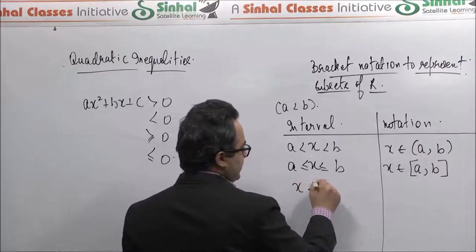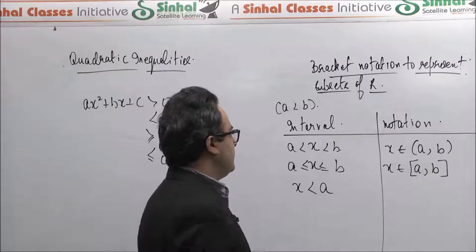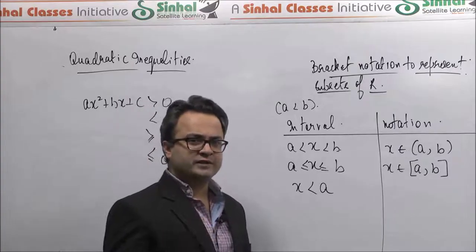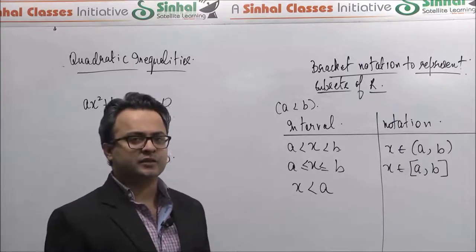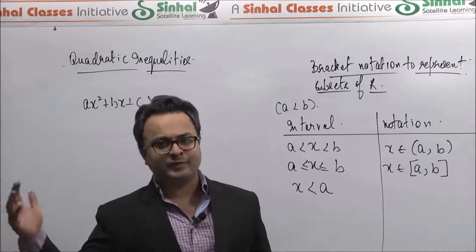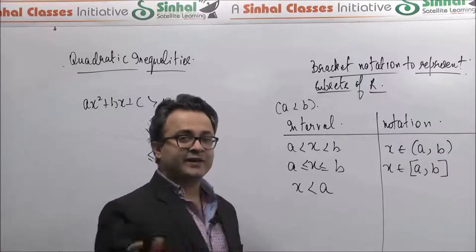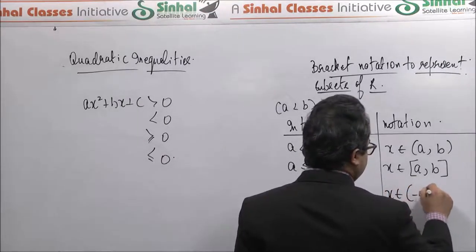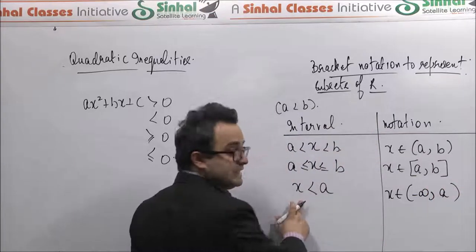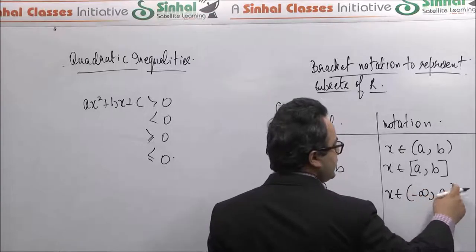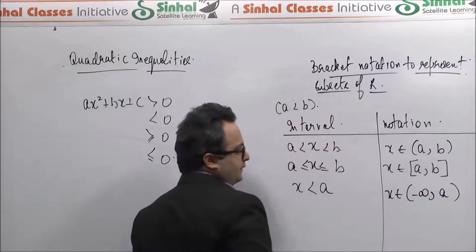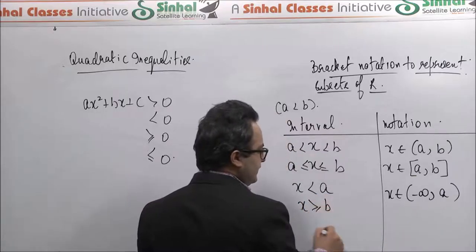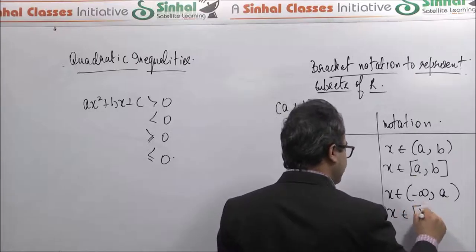Similarly, you might have the interval x less than a. x less than a denotes the set of all values of x which are less than a — for example when x is less than 2, you can go from 2 right up to minus infinity. So x can take any value between minus infinity and 2. In this case we say x belongs to the interval minus infinity to a. Similarly, if it were x less than or equal to a, you would use a square bracket at a. At infinity or minus infinity, there is always a round bracket. For x greater than or equal to b, x can take any value from b to infinity.